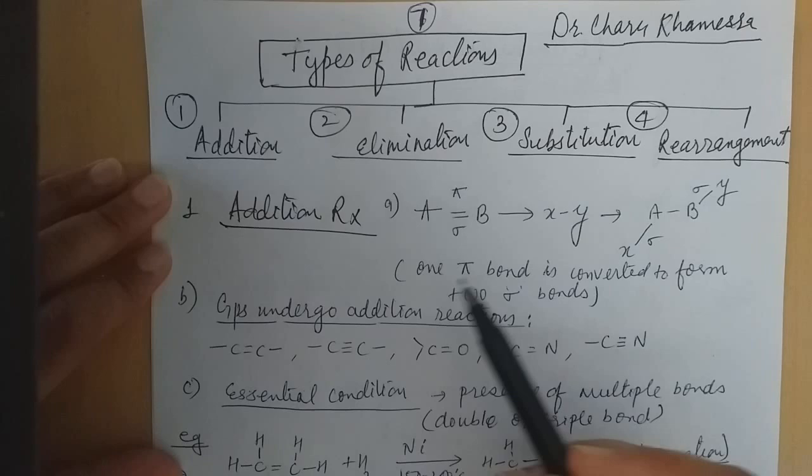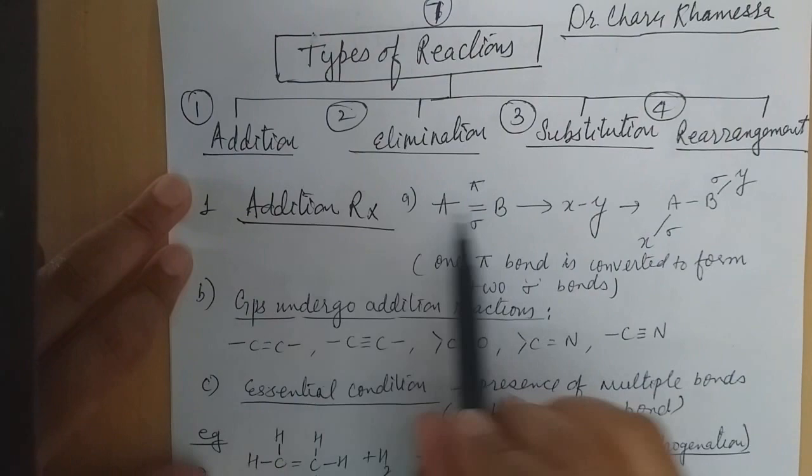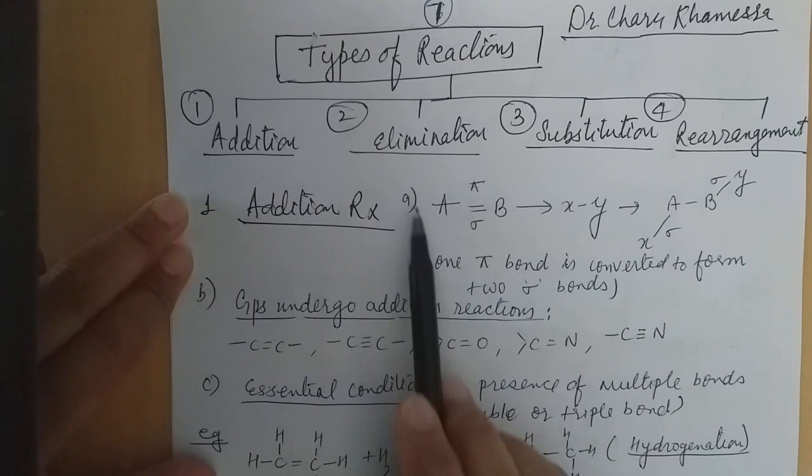Now we are doing the next topic: types of reactions. Types of reactions — four types of reactions are there: addition reaction, elimination reaction, substitution reaction, and rearrangement reaction.